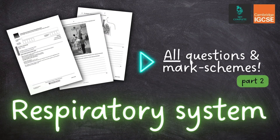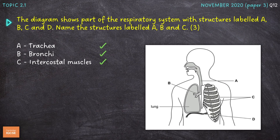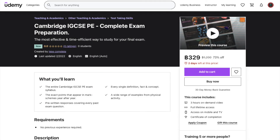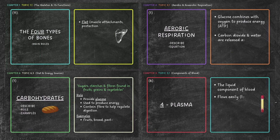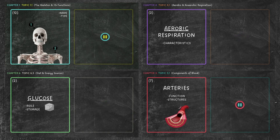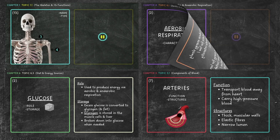Hello and welcome to another complete Cambridge IGCSE PE lesson. In this video, we'll break down and simplify nine recent past exam questions on Chapter 2, The Respiratory System. Consider subscribing to the channel, give the video a thumbs up, and check out the complete exam preparation course on Udemy, which contains everything you need to excel in your IGCSE exam. Check the link in the description to find out more.